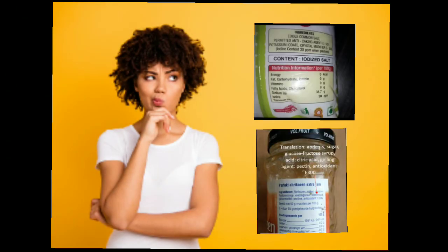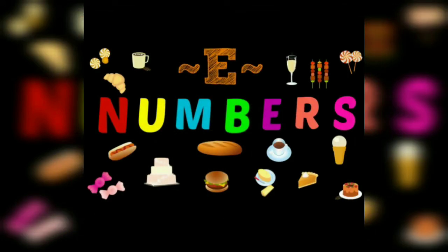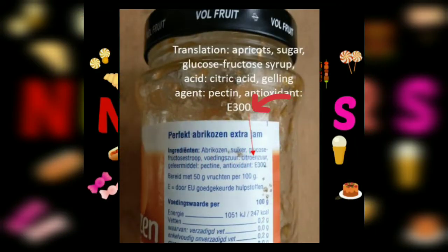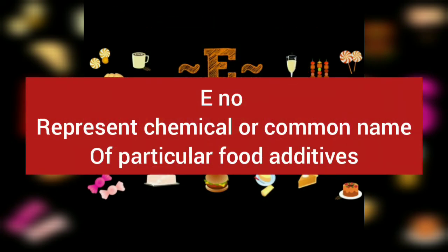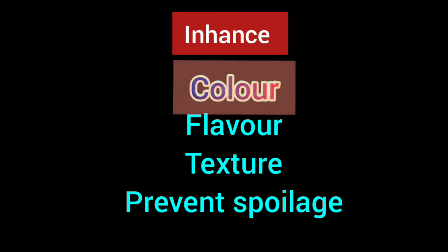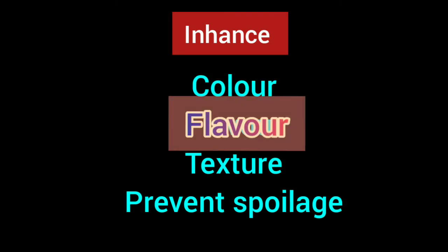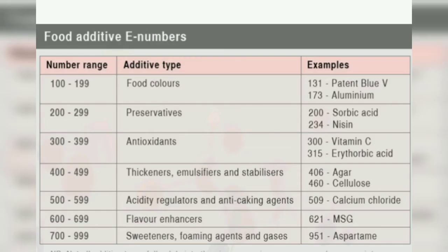Another thing we find in the ingredient list of a food product is the E number. The E number in the ingredient list of packaged food replaces the chemical or common name of a particular food additive. These are used to enhance color, flavor, texture, or to prevent food from spoilage.